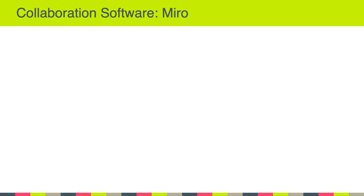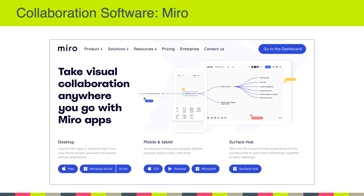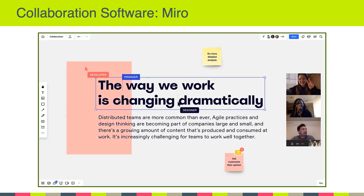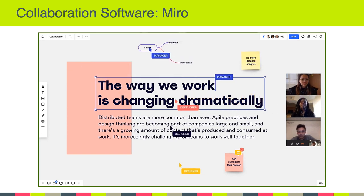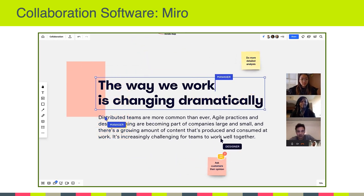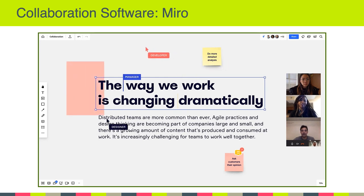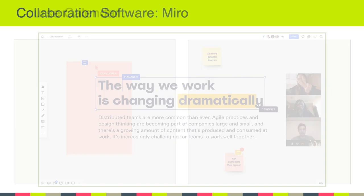A second piece of software we'll be using is Miro. Miro is a flexible whiteboarding program that we'll use this semester to facilitate sharing our design work and research related to visual design. We'll be sharing more details about Miro in the days ahead, but I just wanted you to be aware that this is another tool we'll be using in the class.